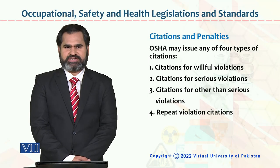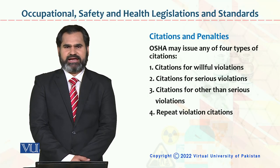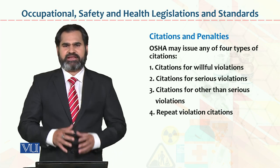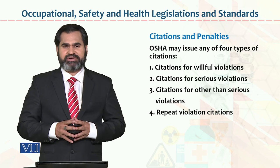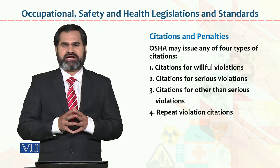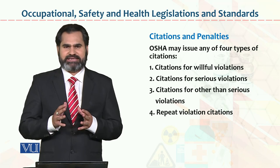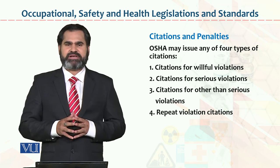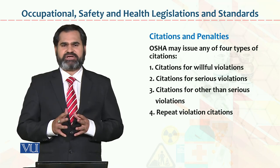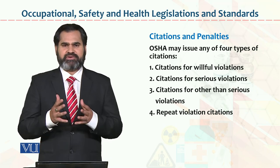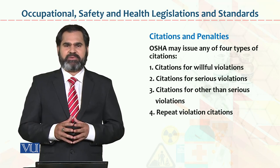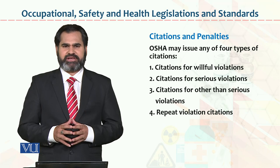Dear students, now we are discussing occupational safety and health legislation and its standards relevant to the Occupational Safety Health Association. When OSHA visits an accidental site where some kind of accident has occurred, they can issue four types of citations — four types of reports or submissions they can assign at that site.